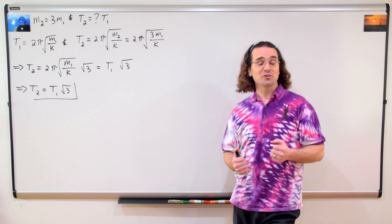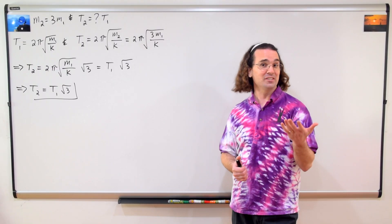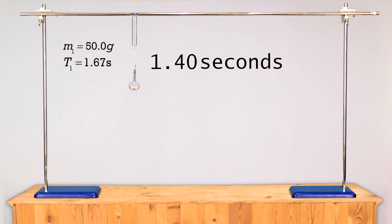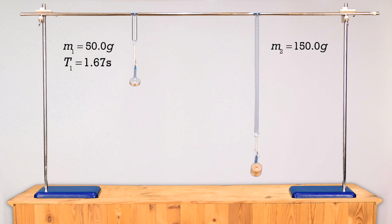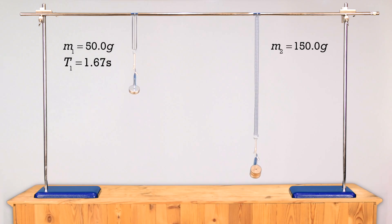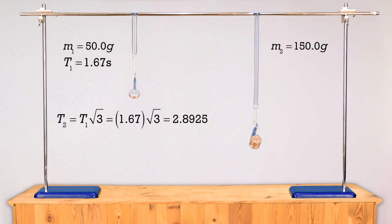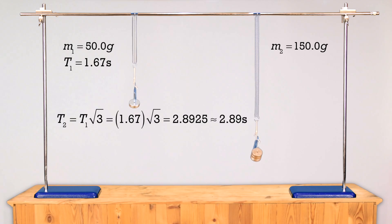Very nice. Now, of course, we are going to demonstrate this. Our first mass-spring system has a mass of 50 grams and a period of 1.67 seconds. If we increase the mass to 150 grams, or three times the original mass, the new period should be 1.67 seconds times the square root of 3, which equals 2.8925 seconds.